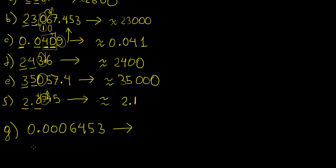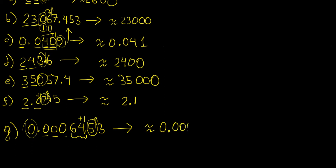The last example is trickier but uses the same techniques. The first digit is 0 — not significant. The next three digits are also 0 — not significant. But the following two digits, 6 and 4, are significant figures. The digit after them is 5, which rounds up to 10, so we add 1 to the next digit. The result is written as 0.00065, the number rounded to two significant figures.